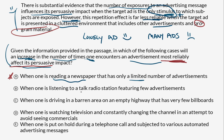When one is listening to a talk radio station featuring few advertisers — this seems very similar to A, so this could also be a contender. Option C: when one is driving in a barren area on an empty highway that has very few billboards. This is interesting, because the action you're doing — driving in a barren area — isn't the same as reading a newspaper or listening to talk radio. You're just driving. Driving isn't program material; you're performing an action. So although there are very few billboards, that's an uncluttered situation. All of these take place in uncluttered situations, but talk radio and newspaper count as program material, so I'm going to cross those off.